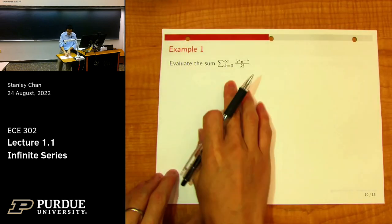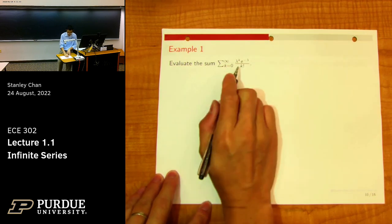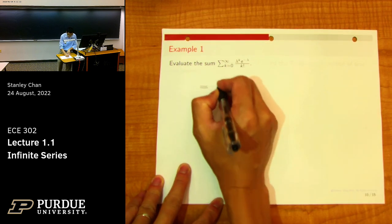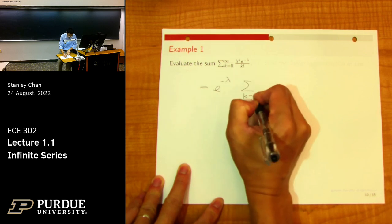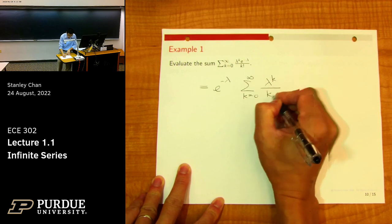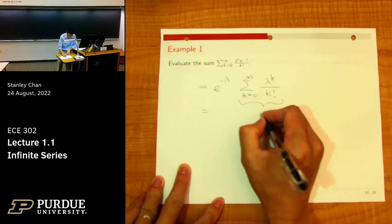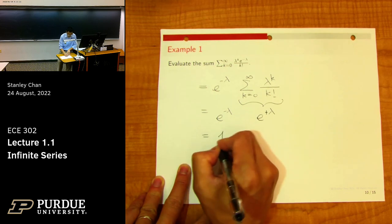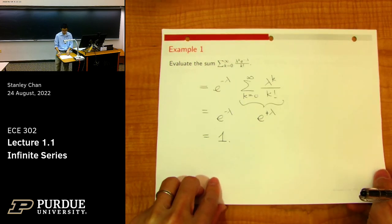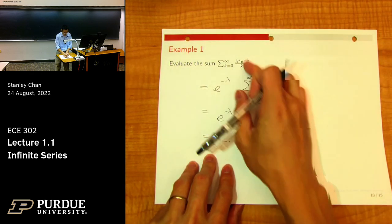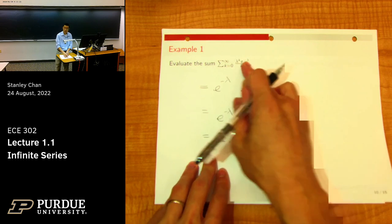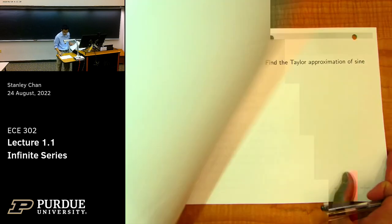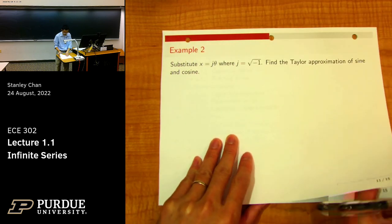For the Poisson PMF, you need to compute the sum of λ^k / k! · e^(−λ) over all k from 0 to infinity. Factor out e^(−λ), and the remaining sum of λ^k / k! is exactly e^λ by the exponential series. So e^(−λ) · e^λ = 1. This confirms that the Poisson probability mass function sums to 1 over all possible outcomes.